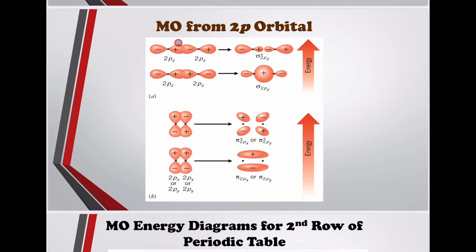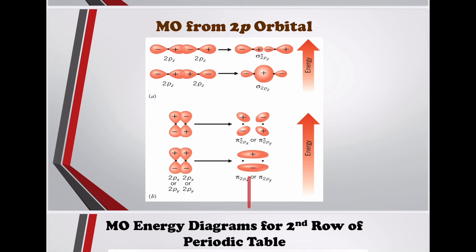Molecular orbitals from 2p orbitals: the bonding and anti-bonding combinations are shown. The Pz orbital forms the sigma-type combination, while Px and Py form the pi-type combinations, each yielding bonding and anti-bonding molecular orbitals.